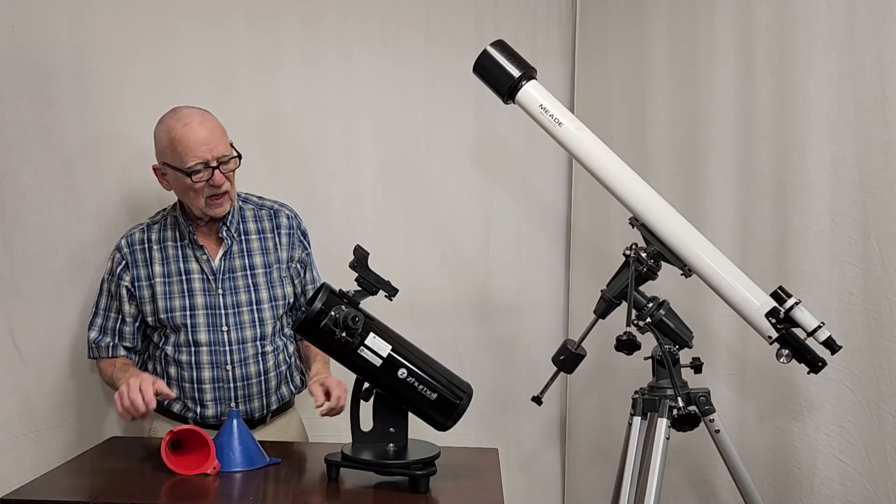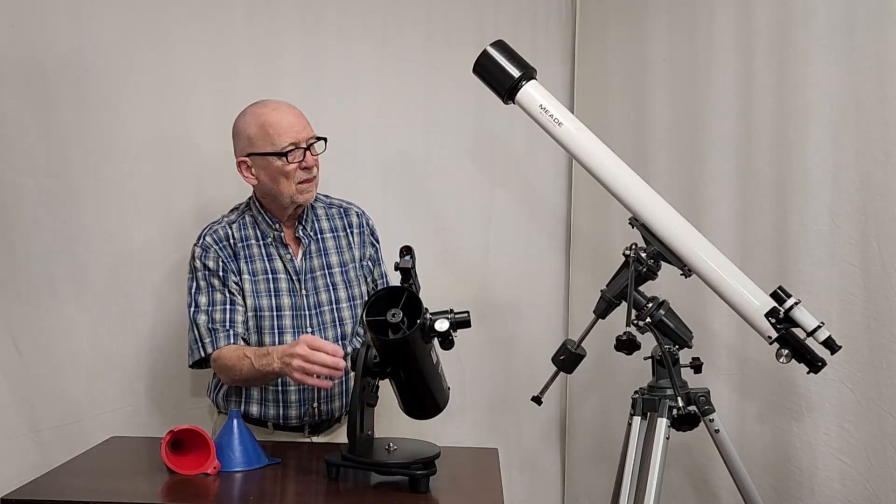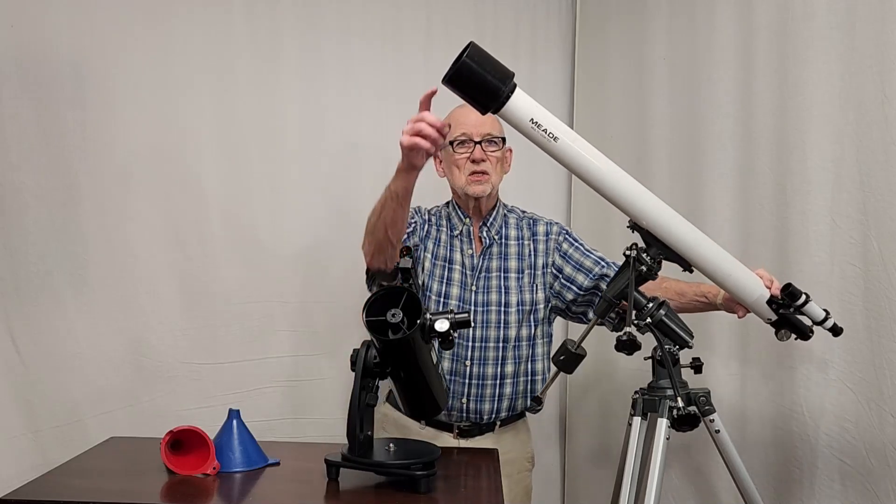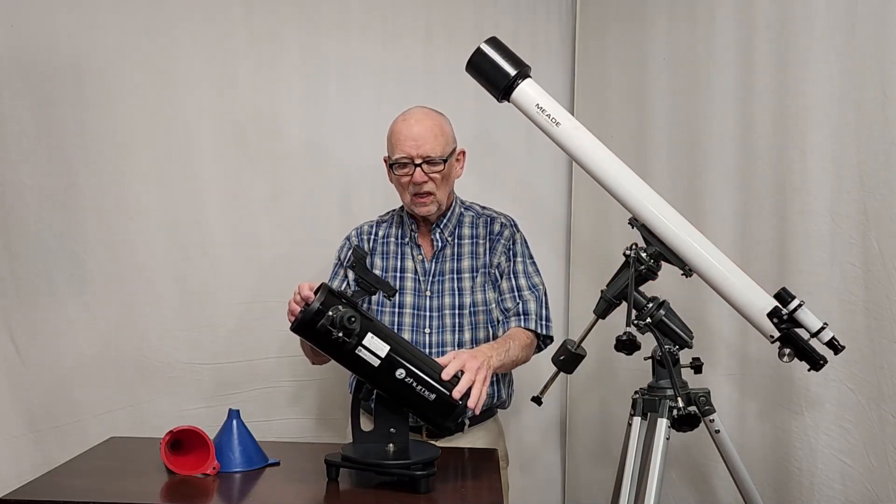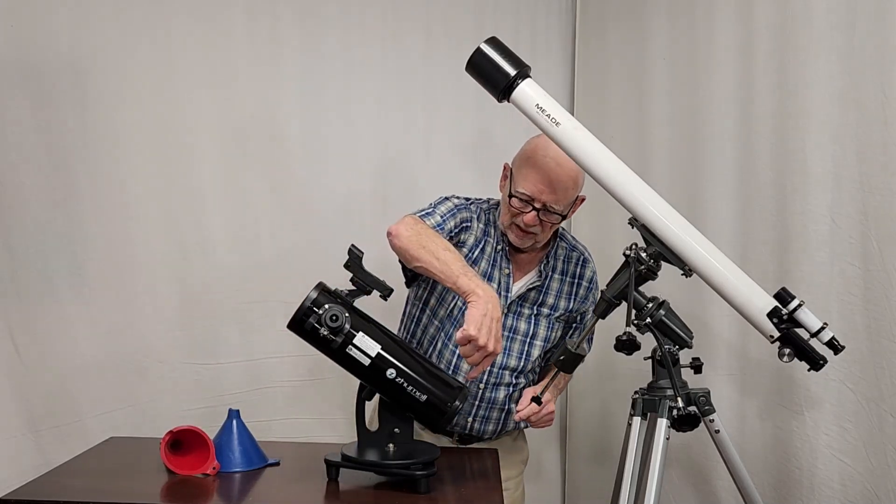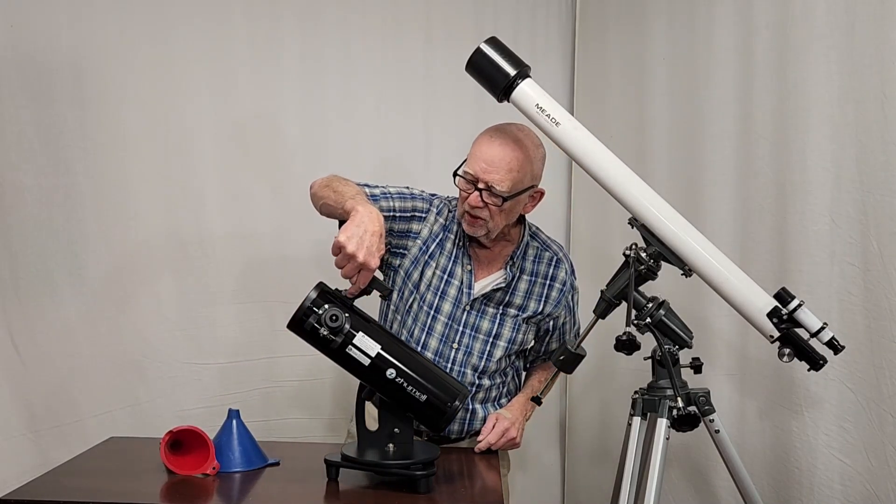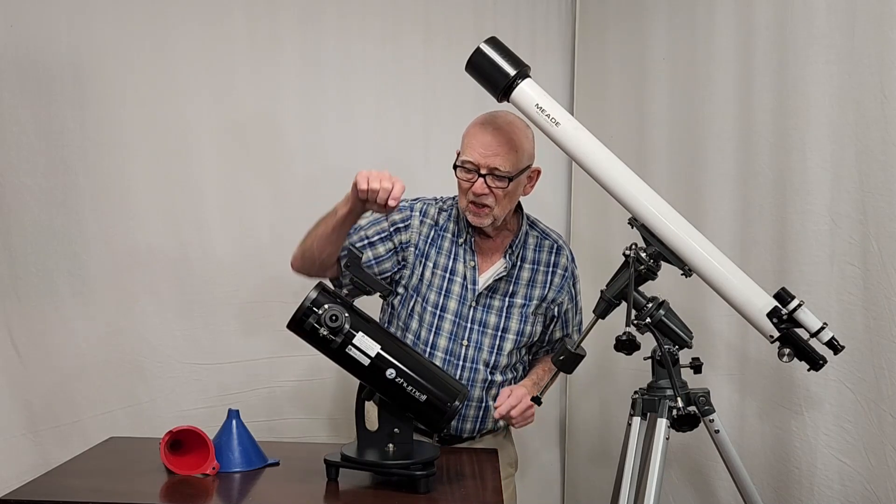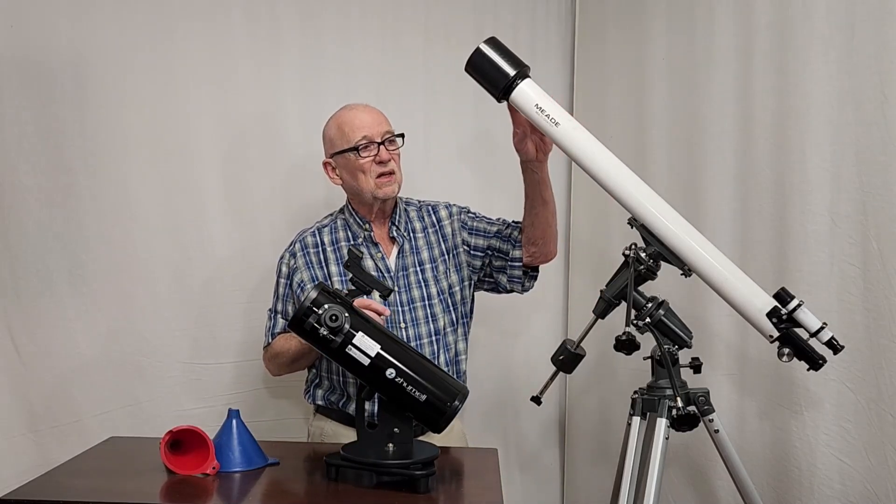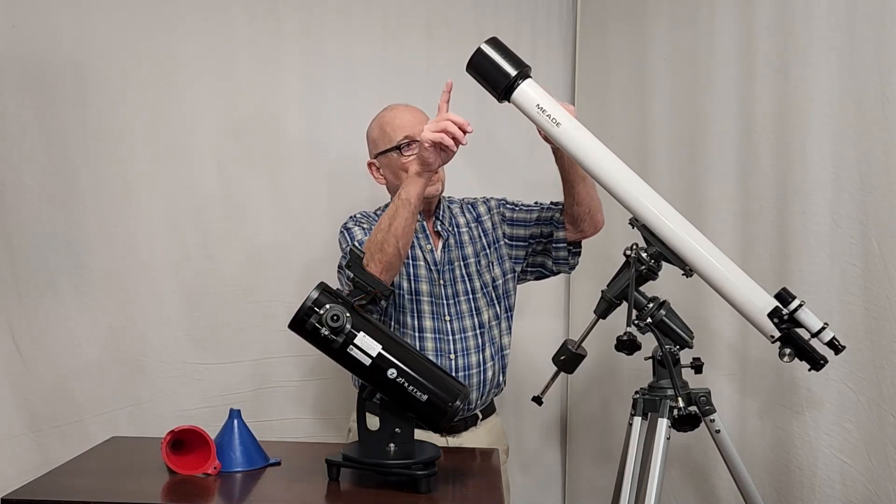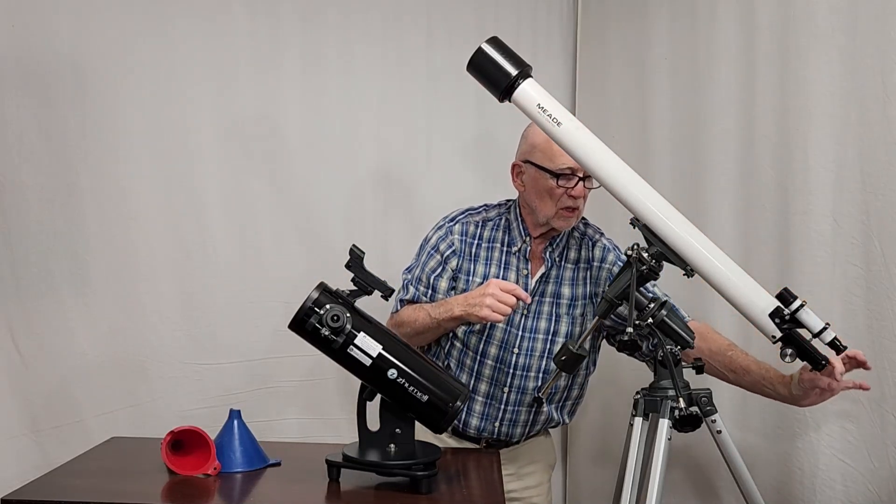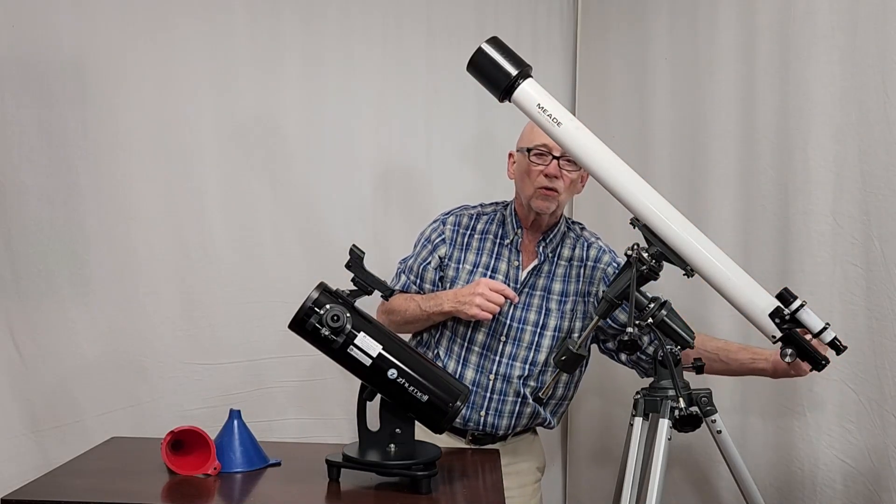The telescopes that I have here are two different kinds. This is a refractor and this is a reflector. This has an opening and the light goes in the front, bounces off a mirror in the back, comes to another mirror up here and bounces out. That's a Newtonian reflector. This is a refractor, what most people think of when they think of telescope. The light comes in the front, goes all the way down to an eyepiece back here.